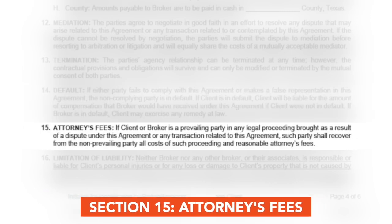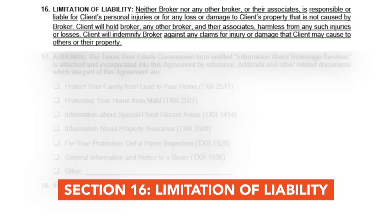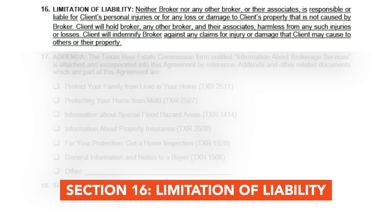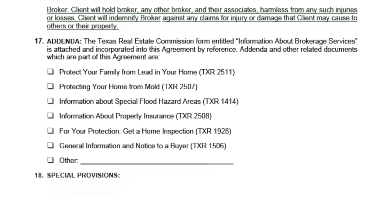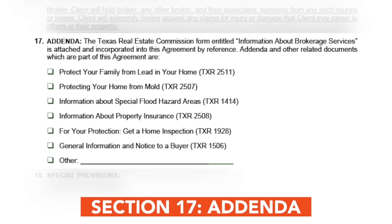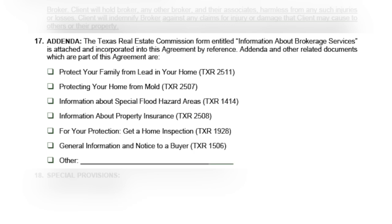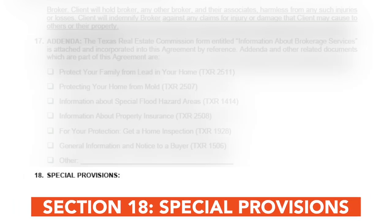The fifteenth section deals with Attorney's Fees and highlights who will cover them. The sixteenth section covers Limitation of Liability, detailing what a broker is liable for and what the limitations are. The seventeenth section covers Addenda, allowing the broker to note which of six noted addenda are part of this agreement along with a space for additional addenda. The eighteenth section is Special Provisions, where the broker can include any additional needed notes.